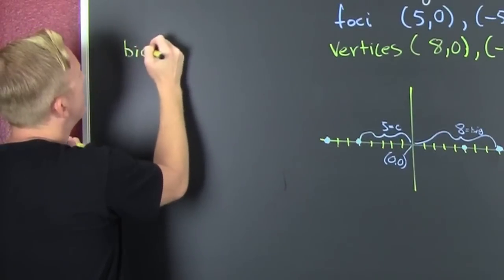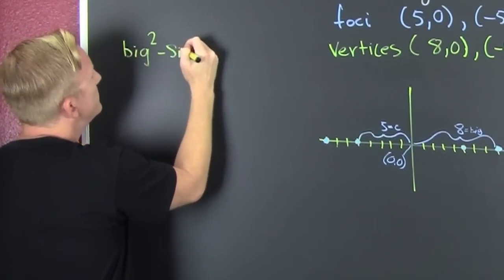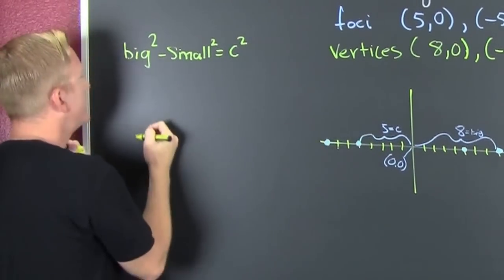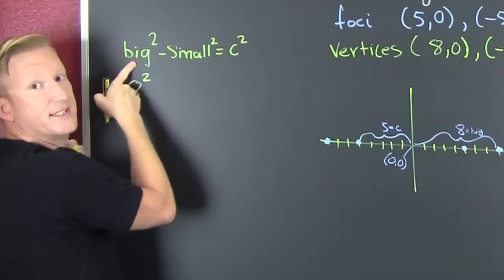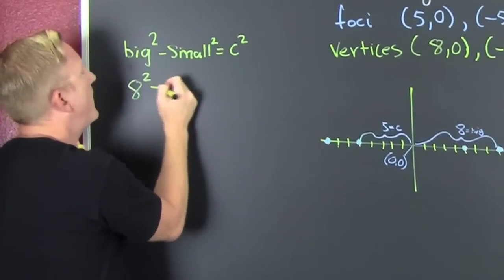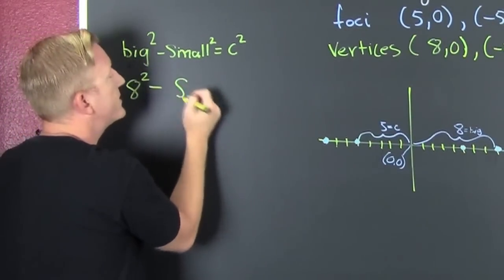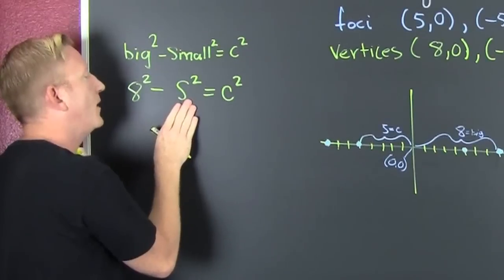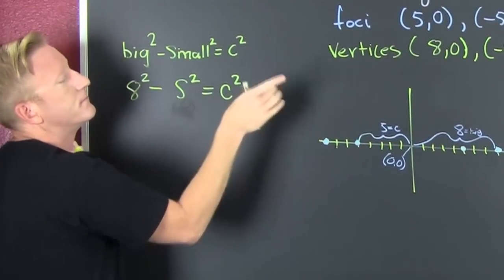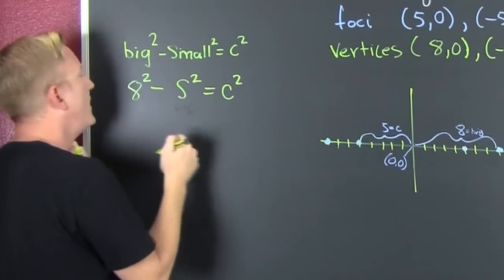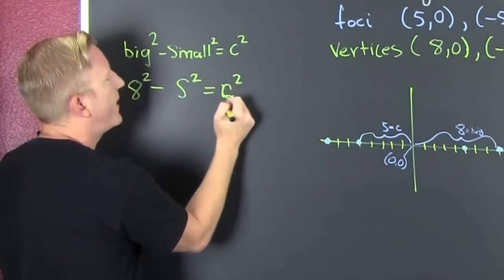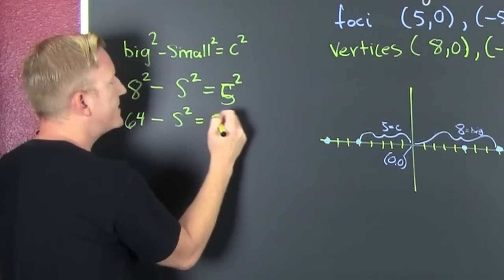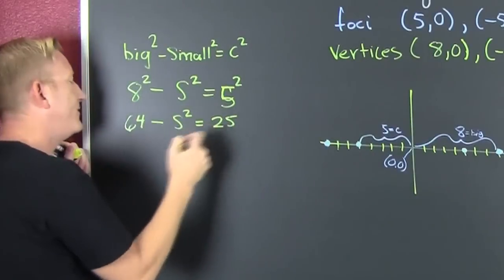It's big squared minus small squared, that's going to be C squared. So let's plug those in there. That's 8 squared, it's big because it's on the major, minus, we don't know our small yet. I'm just going to call it S squared. That's going to be C squared. I should have probably also called it B because my Y is going to be my small. Anyways, that C was 5. Bam.